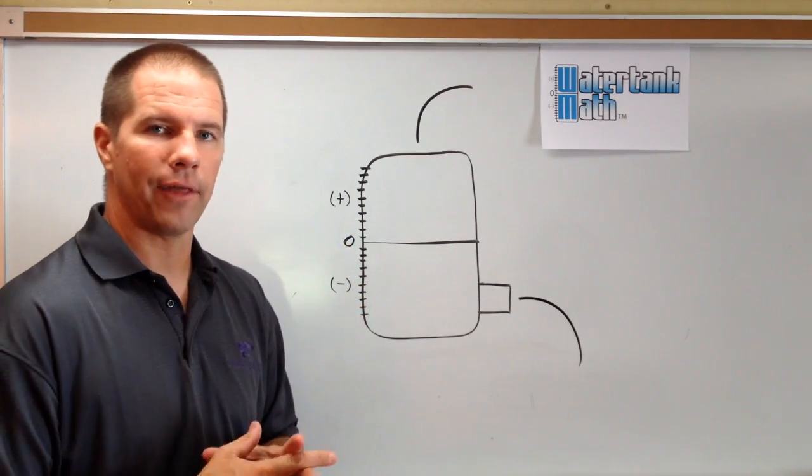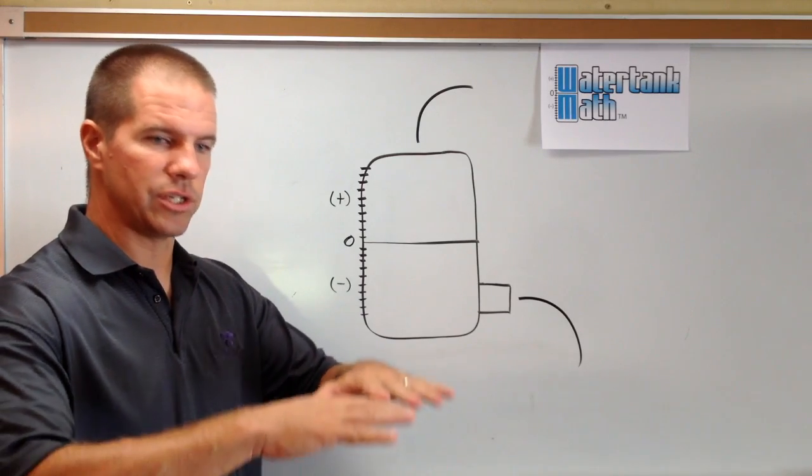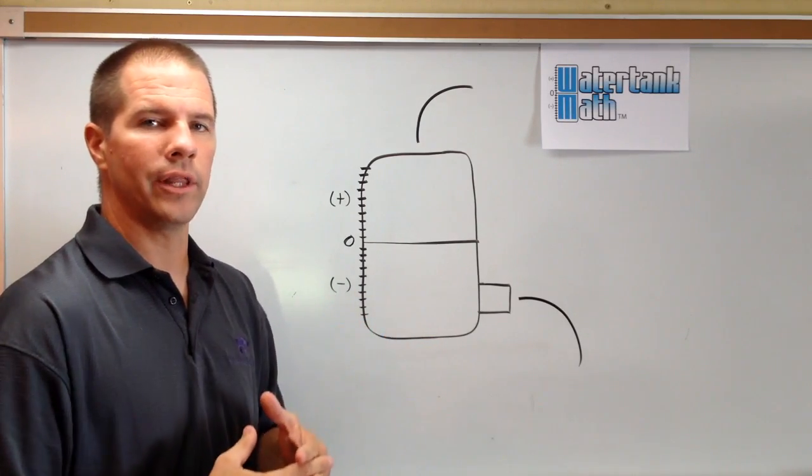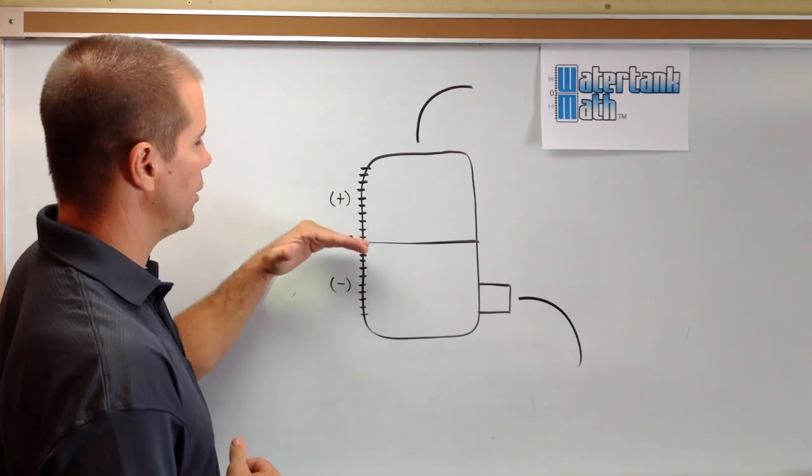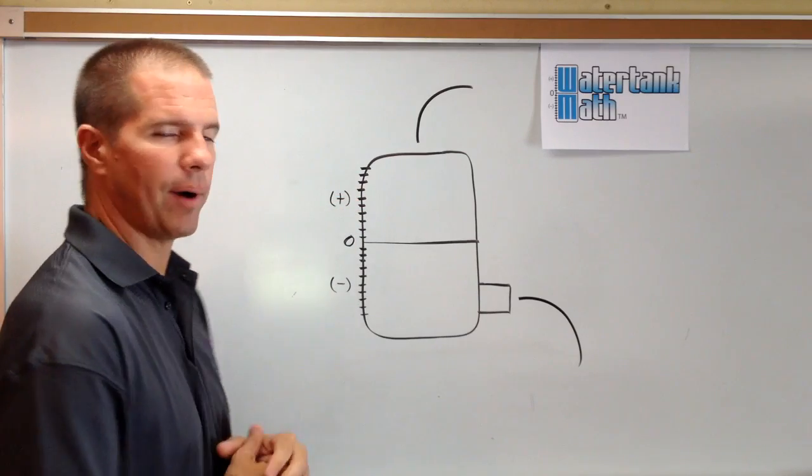Sometimes we've gone into our bathroom at home and the water level for some reason is higher than it normally is. There's more water in there. I'm going to say that those are positive values. So the tick marks above the zero line are going to be my positive numbers.